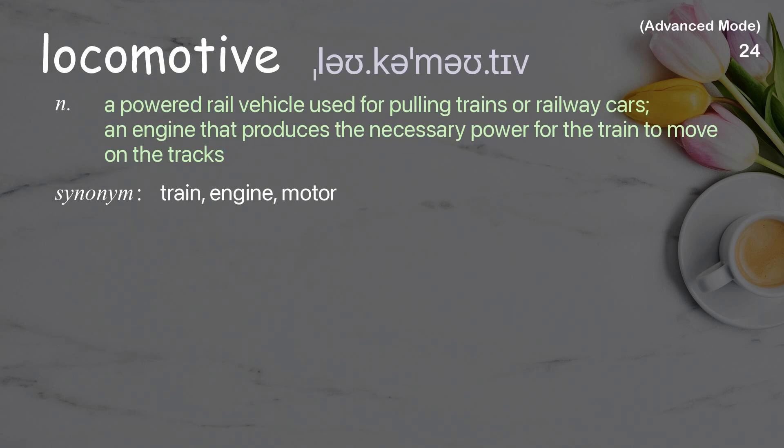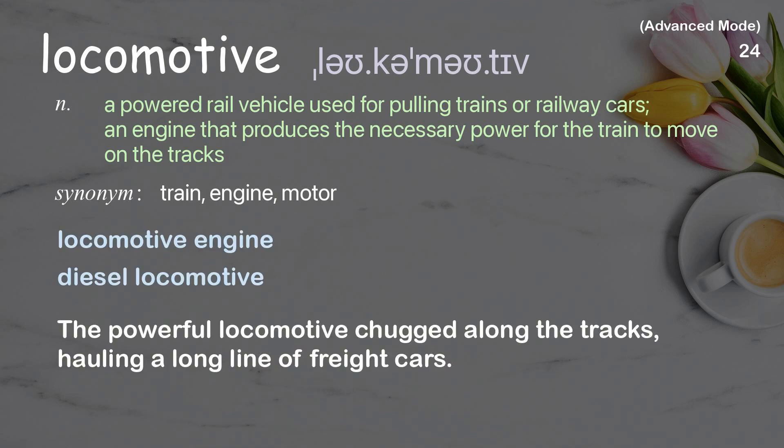Locomotive: a powered rail vehicle used for pulling trains or railway cars; an engine that produces the necessary power for the train to move on the tracks. Examples: locomotive engine, diesel locomotive. The powerful locomotive chugged along the tracks, hauling a long line of freight cars.